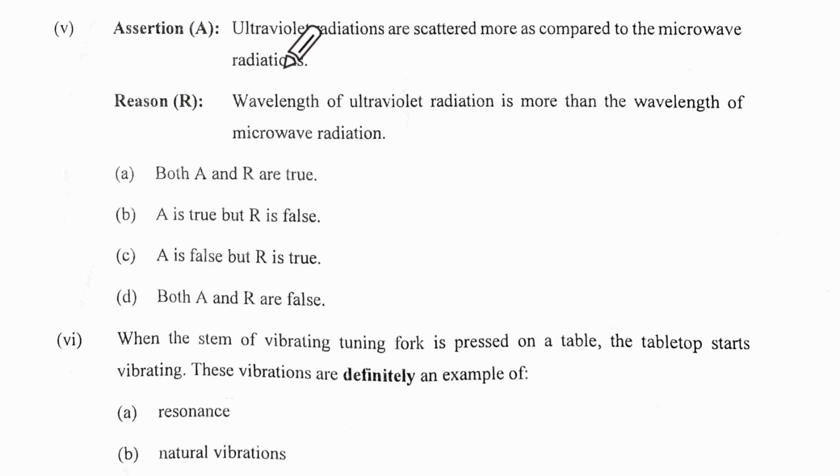Fifth one: assertion - ultraviolet radiations are scattered more compared to microwave radiations. The intensity of scattering is inversely proportional to λ^4, the wavelength. The wavelength of microwave is greater, so UV wavelength is less. Because of that, microwave will be scattered less and UV will be scattered more, which is correct. So assertion is correct, but the reason says wavelength of UV is more than, which is false. So A is true, this is false, and the option is B.